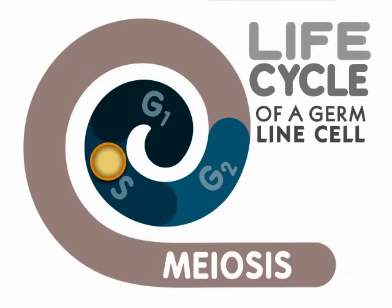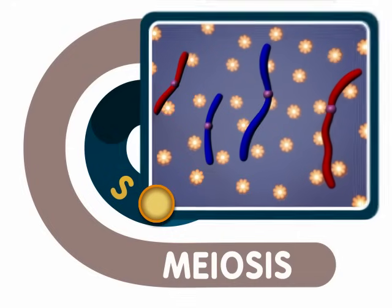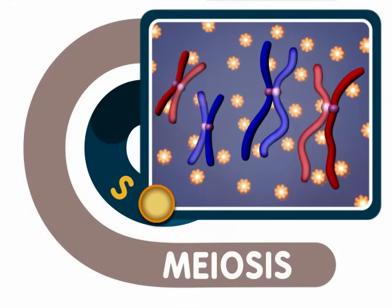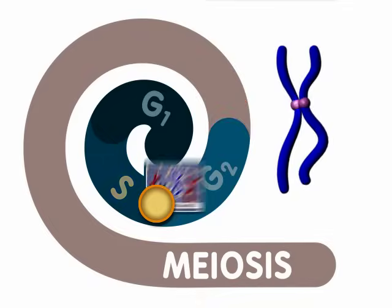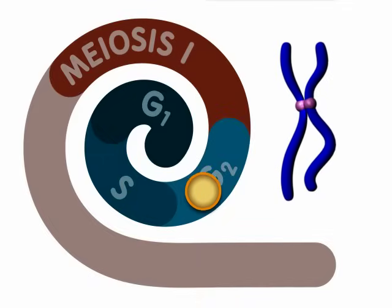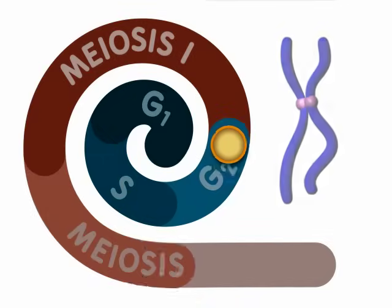The DNA inside a germline cell is duplicated before meiosis begins during the S phase. The duplicated germline chromosomes are called sister chromatids. These chromatids remain attached to each other until the second cell division event in meiosis.